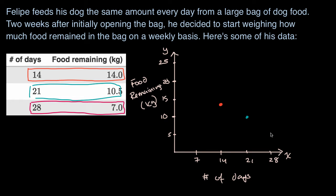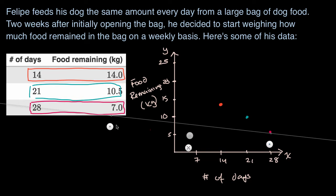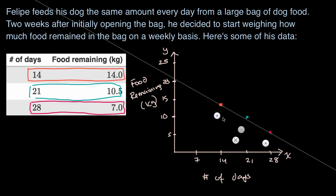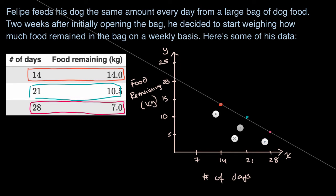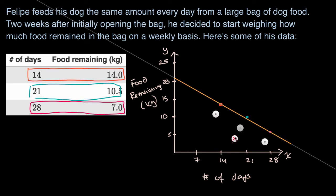We're assuming the rate of dog food usage is the same — that he's feeding his dog the same amount every week. And so this would describe a line; the rate is going to be the slope of that line. If we can plot this line and know where it intersects the x and y axes, we might be able to figure out some other things. So let me draw a line here and connect the dots.